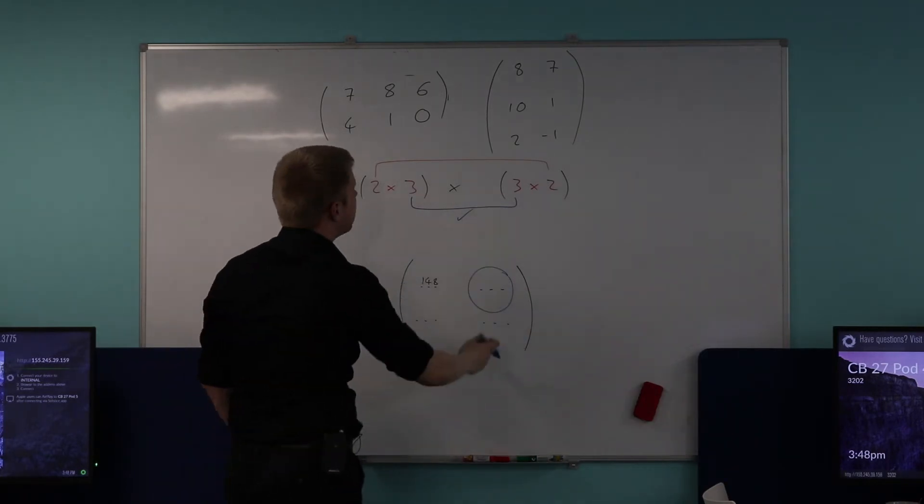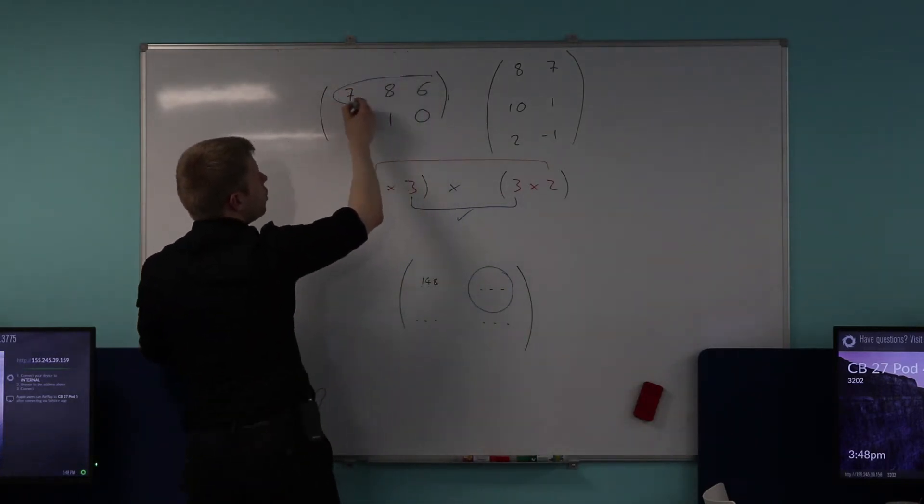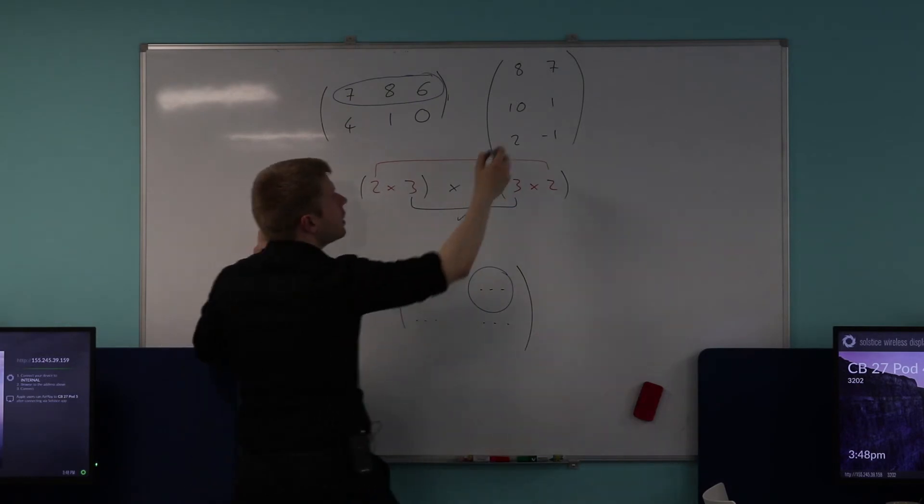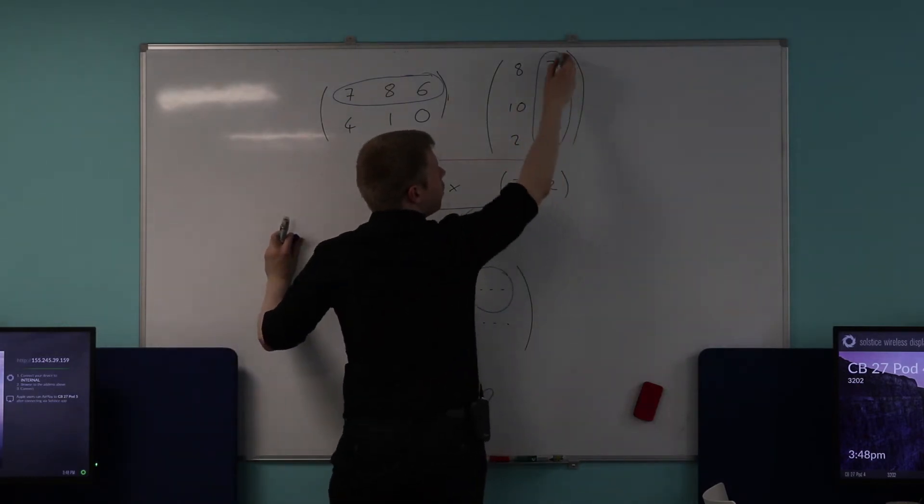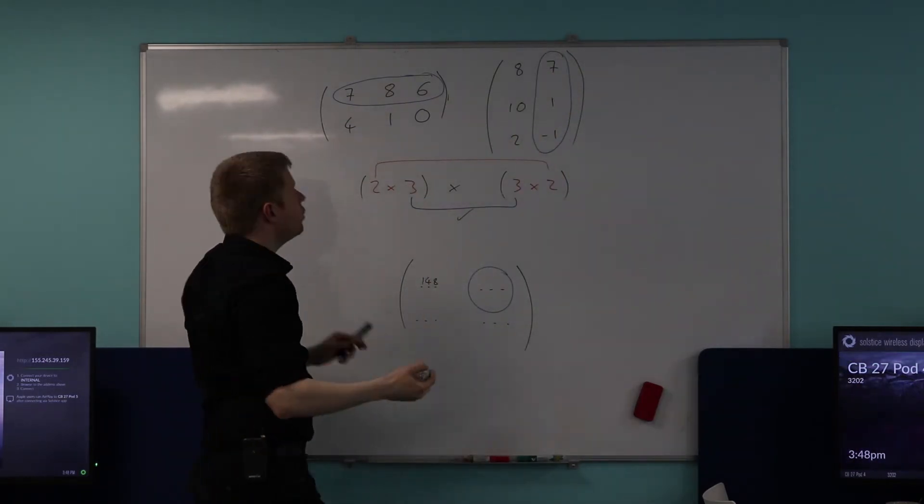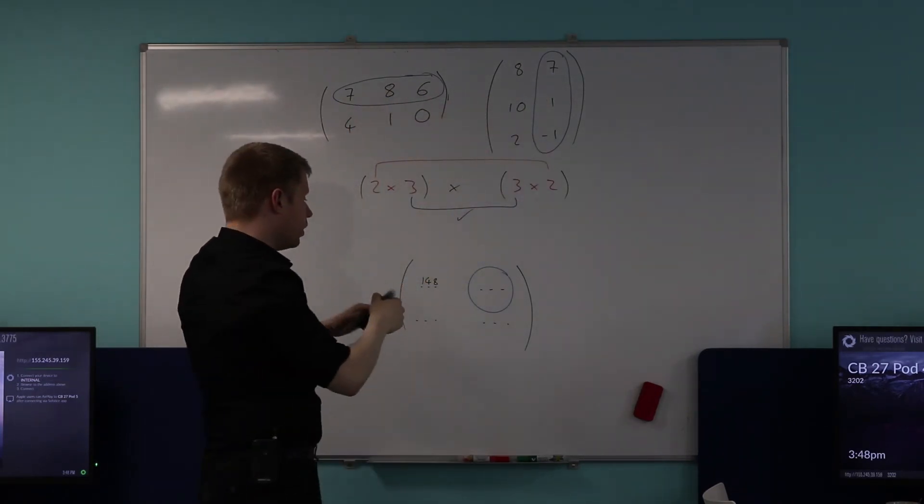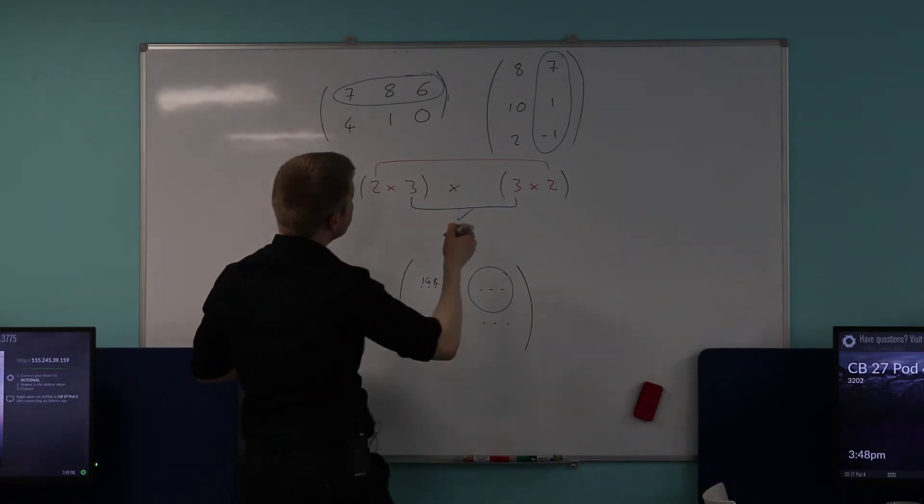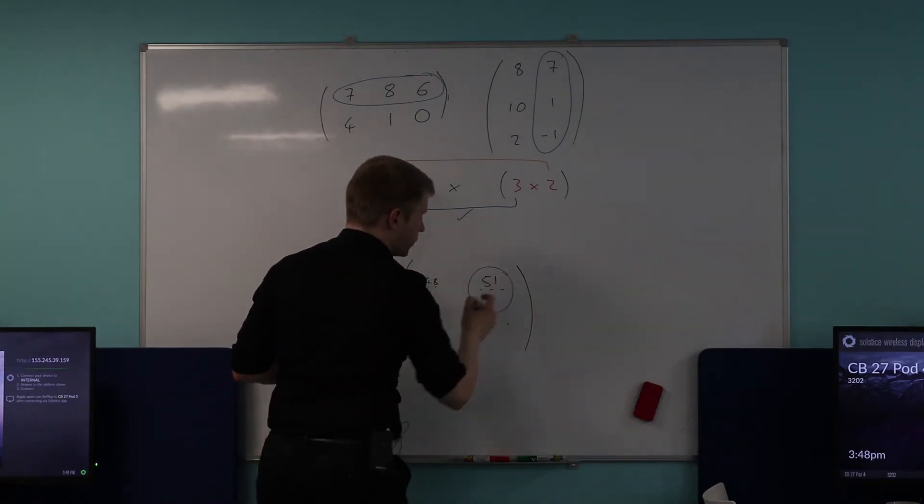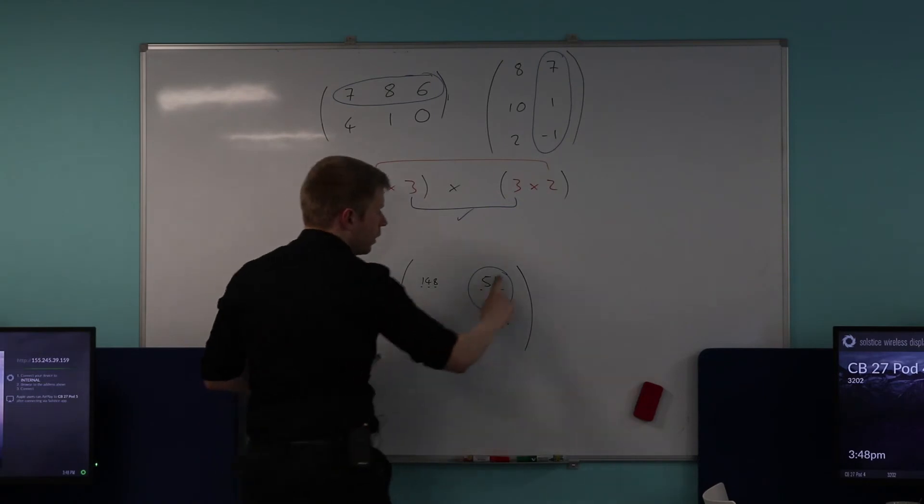Which means I'll be using the first row of this matrix and the second column of this matrix. So let's do this. Seven by seven, add eight times one, add six times negative one is equal to? 51. 51? Okay, I'll take your word for it. Yep. Okay, fine.